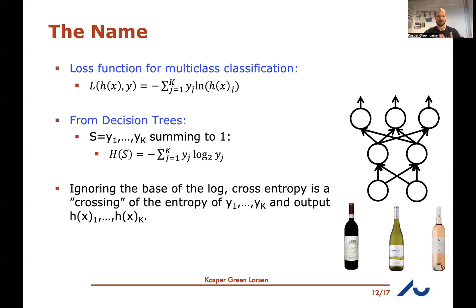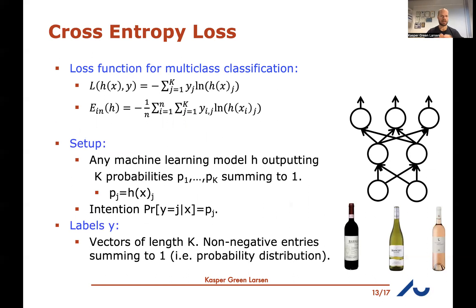The change of log base doesn't matter for a loss function, since natural log and log base 2 differ only by a constant scaling factor, which doesn't affect minimization. So the formula works the same regardless of log base. That's where the name 'cross entropy' comes from, and that concludes the definition and derivation of the cross entropy loss function.